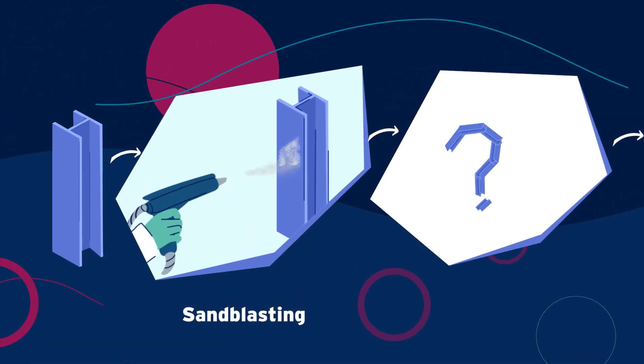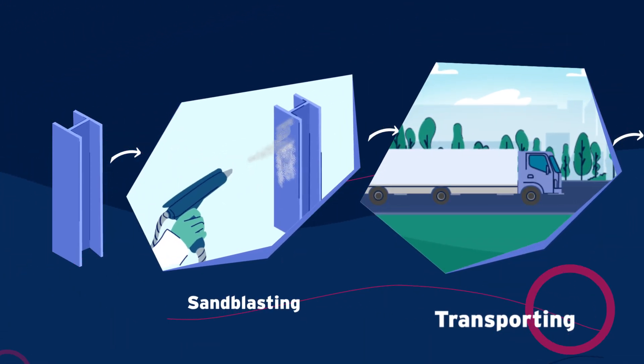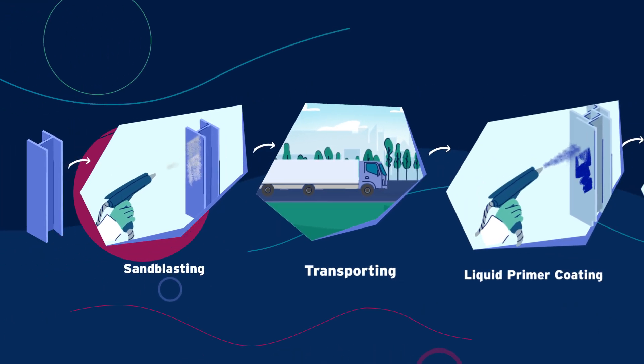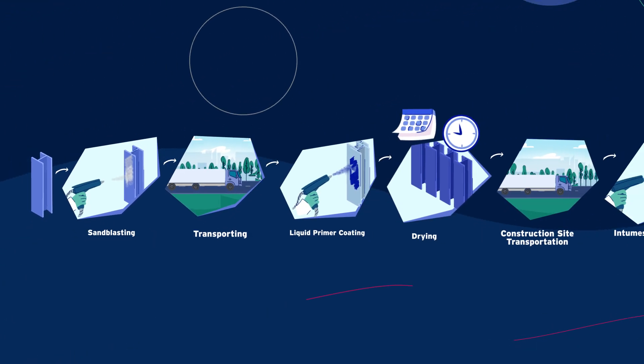The steel is first sandblasted and then transported. Liquid primer coating is applied and allowed to dry.